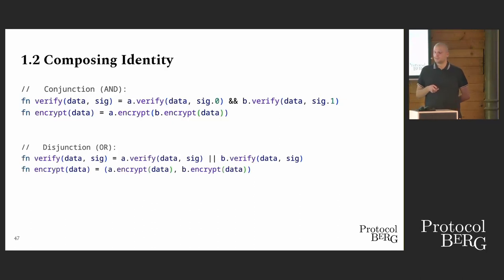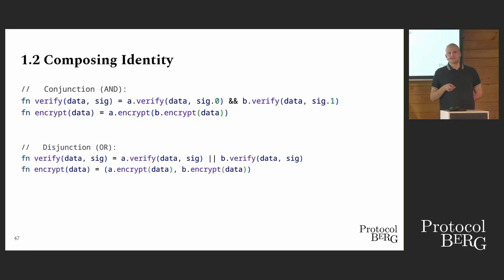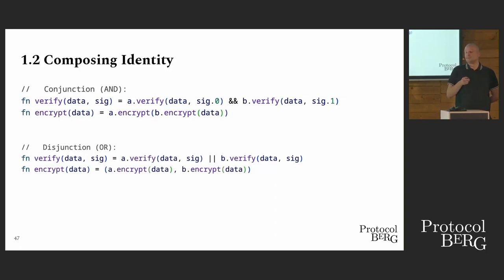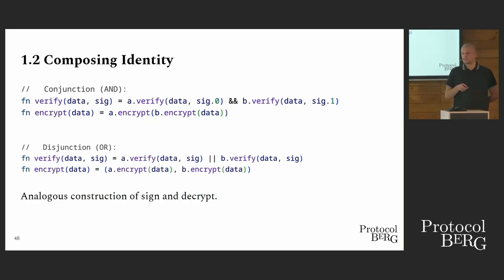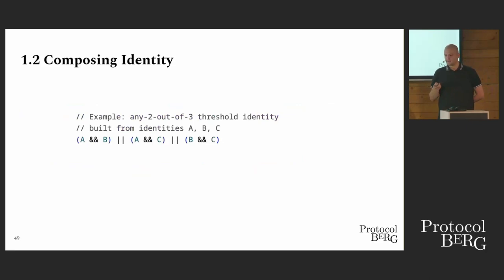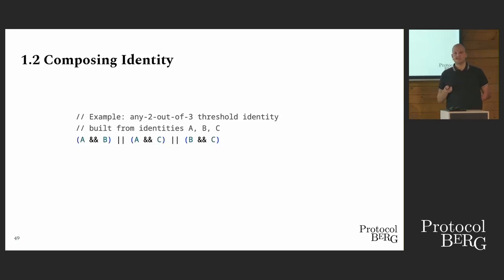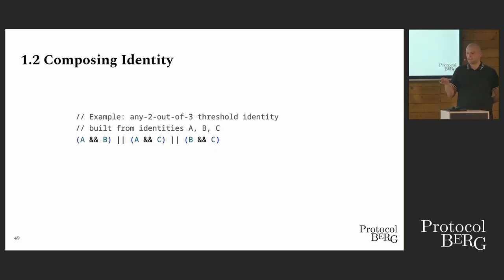We can also define an OR, where any signature of the set would be sufficient to verify a valid message from this OR-composed identity. And if we encrypt for them, we encrypt it with both keys in parallel, so either party can decrypt it. The analogous construction goes for sign and decrypt operations. For example, if we want any two out of three threshold identity built from A, B, and C, we get a couple of connectives, and this generalizes to staking problems or other threshold schemes.